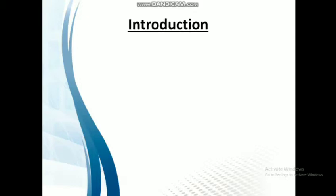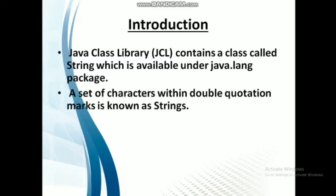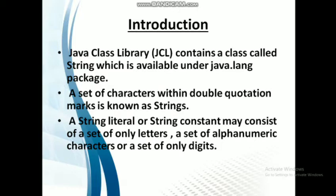Strings are the set of characters combined together — that is, words. Words are called strings in Java. The Java class library (JCL) contains a class called String, which is available under the java.lang package. A set of characters within double quotation marks is known as a string. Characters are mentioned in single quotation marks, whereas strings use double quotation marks. A string literal or string constant may consist of only letters, alphanumeric characters, or only digits.